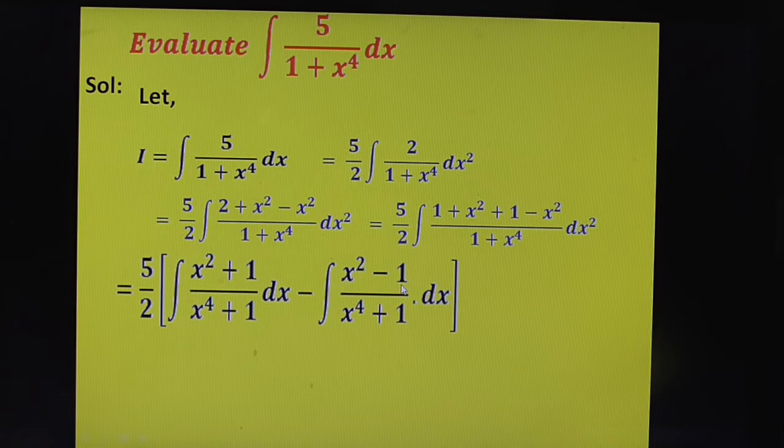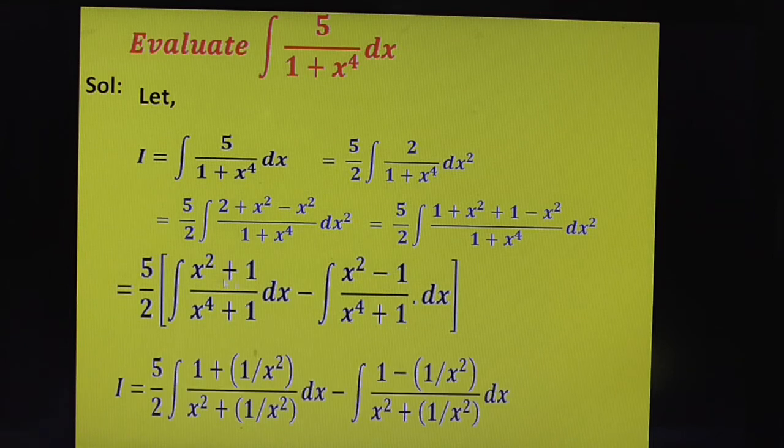Here, 1 minus 1 by x square. What you get? Yes, very good. That is x square plus 1 by x square. So divide by x square to both numerator as well as denominator. Now, easily you can do.